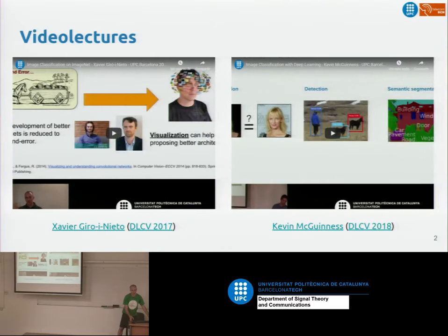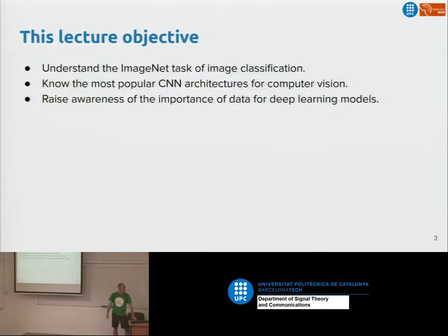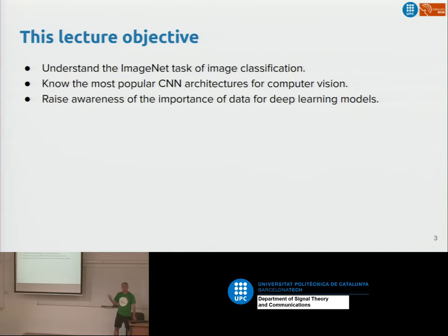If you want to review this content later, we have lectures from previous years recorded that you can play at home. In this task we're going to review what ImageNet is and why this dataset and challenge has been very important for vision, which are the most popular architectures used for image classification, and how important data is to train deep neural networks for vision.